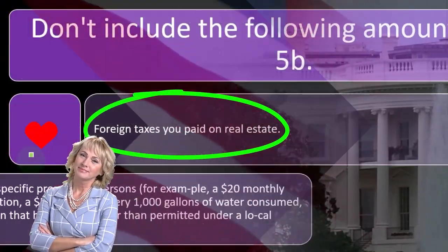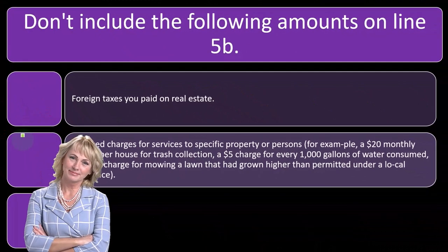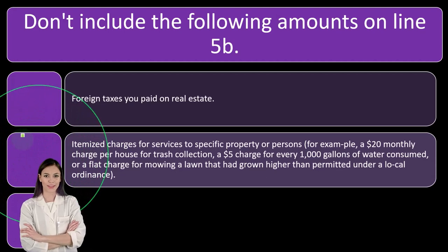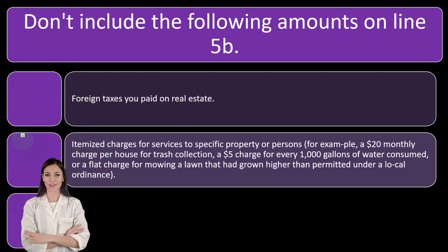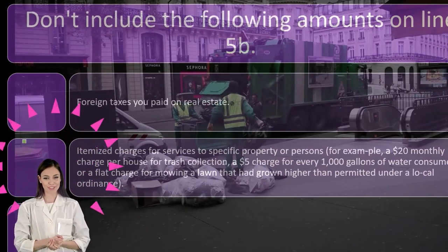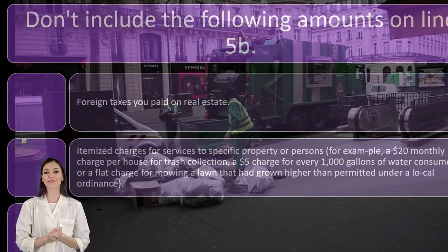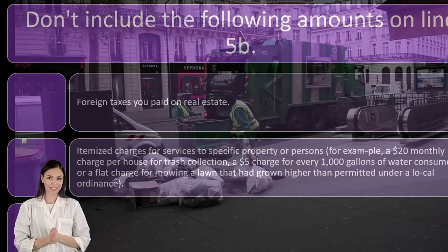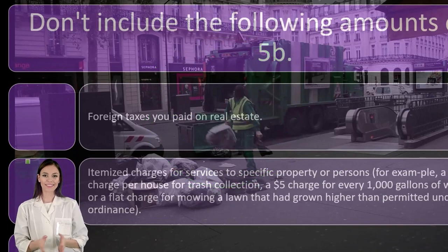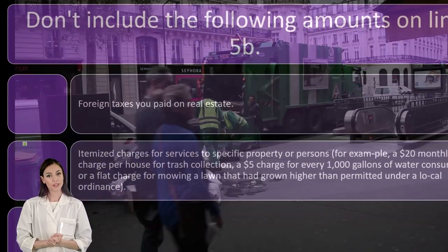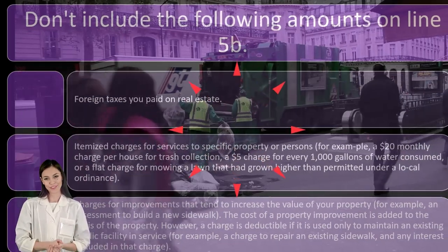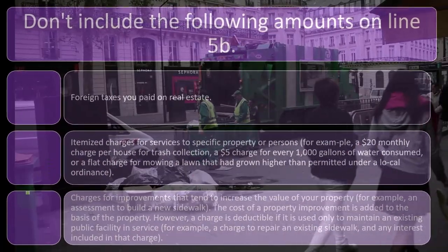Foreign taxes you paid on real estate — we're not subsidizing foreign taxes here. Also excluded are itemized charges for services to specific property or persons. For example, a $20 monthly charge for trash collection, a $5 charge for every 1,000 gallons of water consumed, or a flat charge for mowing a lawn that had grown higher than permitted under a local ordinance. Those are more like fees — you're paying for goods and services, not taxes.